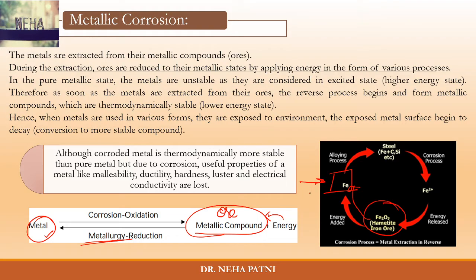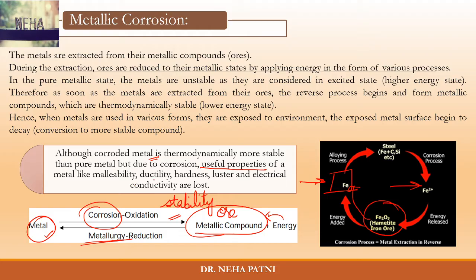When the metal is at a higher energy state, thermodynamically it is unstable. When the metal becomes unstable, it has a tendency to go back to the stable state. It reacts with the environment, and that reaction is known as corrosion, because it reacts with the environment and gets converted to the metallic compound or ore — any kind of compound — in order to go back to its original lower energy state or stable state.